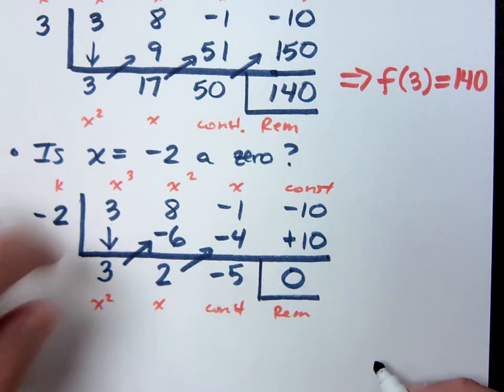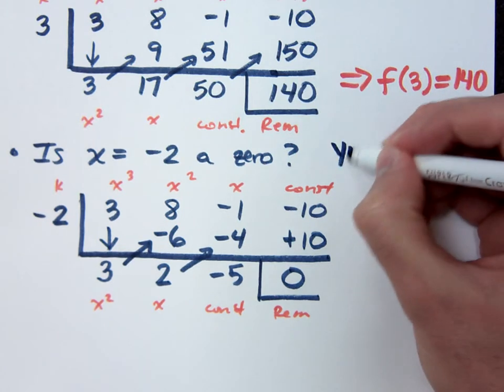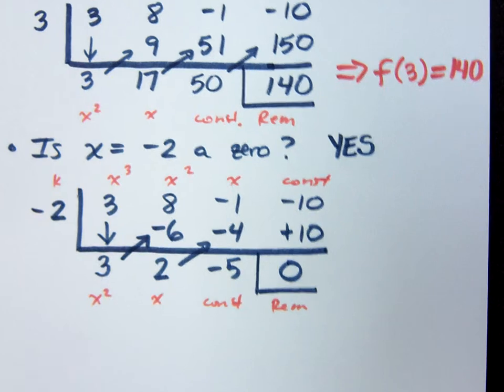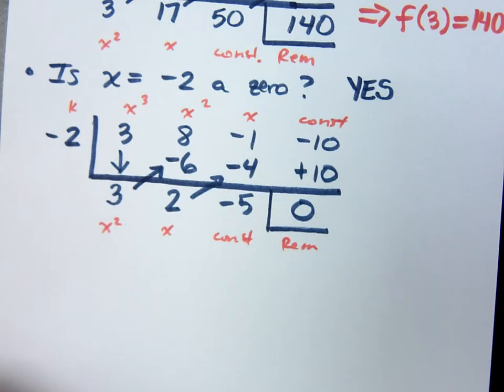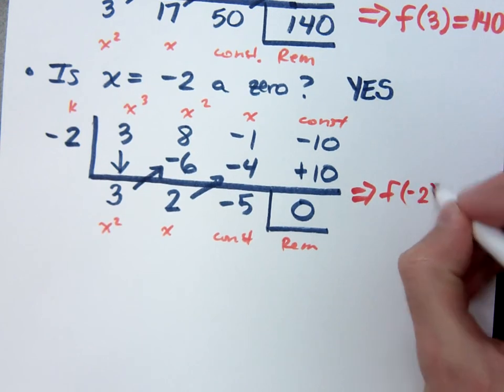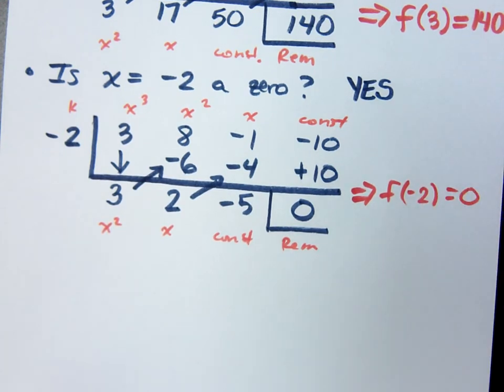So is it a zero? It is a zero. So what we've found out here is this. We can conclude that my function evaluated at -2 equals 0. Do you all agree? Yes.